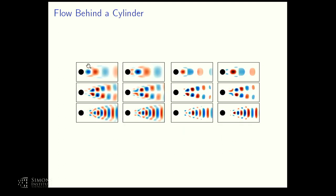As another example, this is flow behind a cylinder. On the left are the PCA modes; on the right, sparse PCA modes, which nicely localize the coherent structure of the dataset.